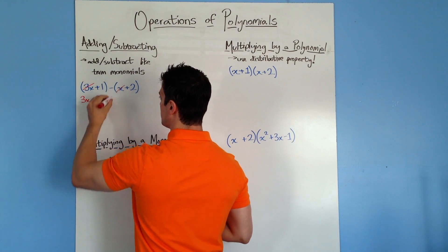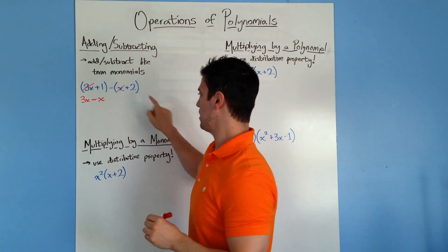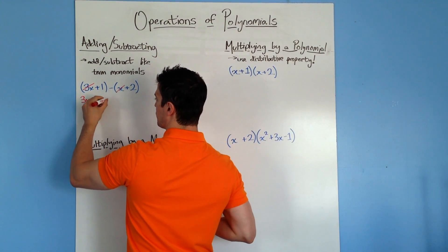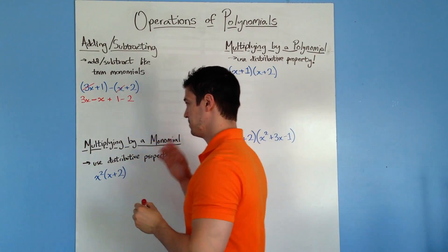but it's really important to see that it's 3x minus x. I'm going to kind of cross these off as I go. Next, I'm going to do the plus 1 minus plus 2. So I'm going to do plus 1 minus positive 2, like so.